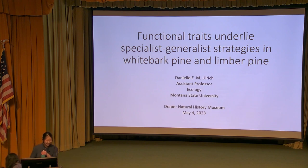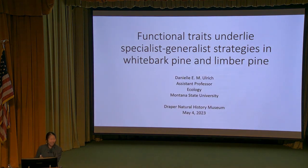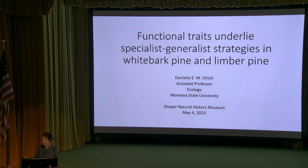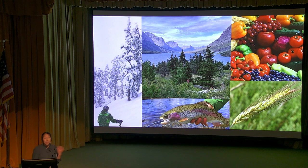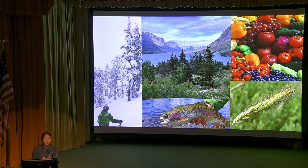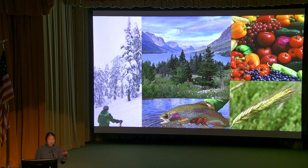Thanks for that introduction and thank you all for being here today. We all know that plants and vegetation and forests are incredibly valuable for the ecosystem services they provide. They form the backbone of many ecosystems - they provide food to eat, clean air to breathe, clean water to drink, and beautiful places to recreate in and connect with, especially living in this greater Yellowstone region.